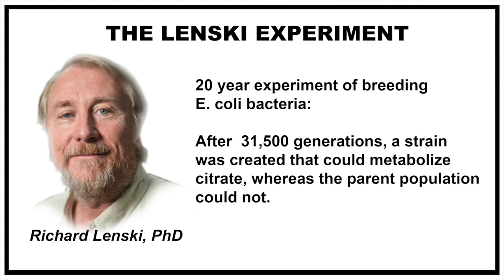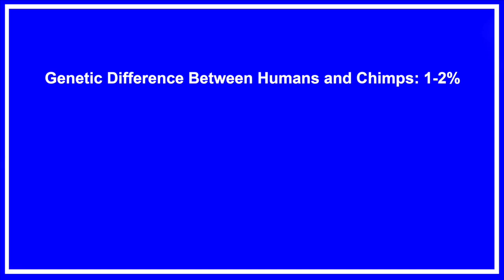Here are the results that supposedly prove evolution. After 31,500 generations, a strain emerged that could metabolize citrate, while the parent colony couldn't. This is one of the most repeated evidences presented for the contention that evolution has been observed in the lab. It's commonly argued that the difference in DNA between a human and a chimpanzee is 1 to 2%. I'm going to throw every advantage on the side of evolution and demonstrate that human evolution is still impossible by referencing this experiment with E. coli bacteria.